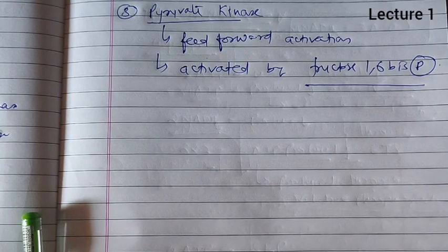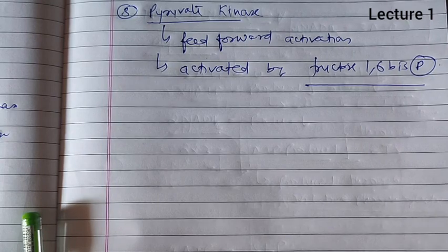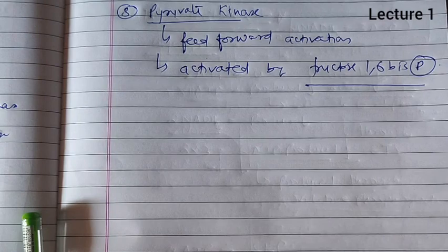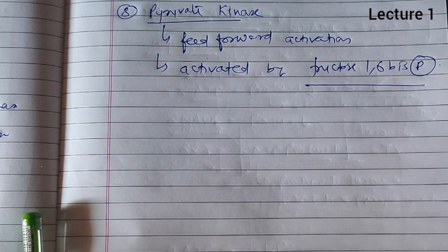Glycolysis produces 2 molecules of pyruvic acid. What will happen to these 2 pyruvic acid molecules in aerobic respiration — that we will study in the link reaction and Krebs cycle in the next lecture. Thank you.